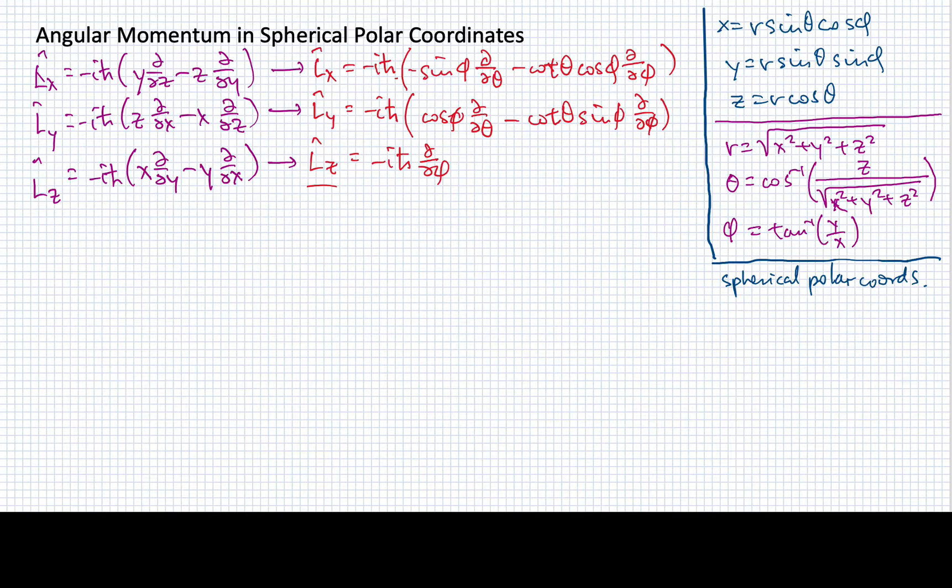All right, now with these three components, we can actually construct the square of the angular momentum. And I'll simply indicate that the square of the angular momentum is the sum of the three components. So it would be Lx squared plus Ly squared plus Lz squared. And that's true in both classical and quantum mechanics.